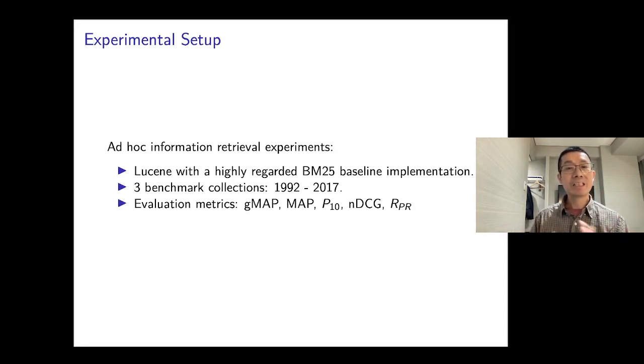In this first set of experiments, we work on the task of information retrieval. We actually reused an existing highly regarded BM25 baseline implementation with Lucene. We tested the methods on three benchmark collections in the text retrieval conference from 1992 to 2017. It's really three collections spanning 25 years in the history of text retrieval conferences. We use a number of very popular evaluation metrics, the mean average precision or MAP, and then the geometric mean average precision G-MAP, and then precision at 10, normalized discounted cumulative gain record precision.